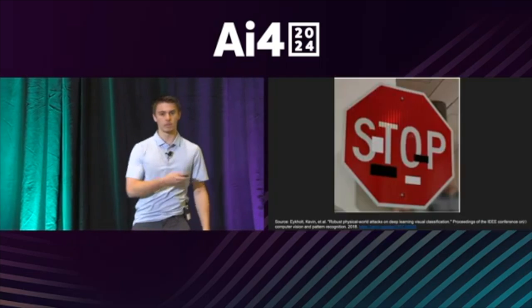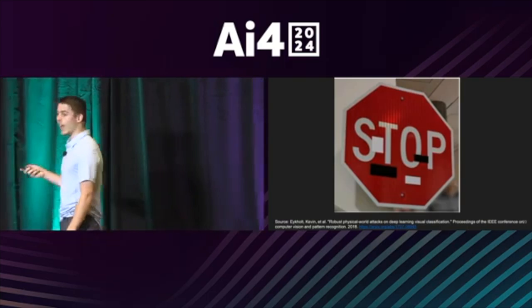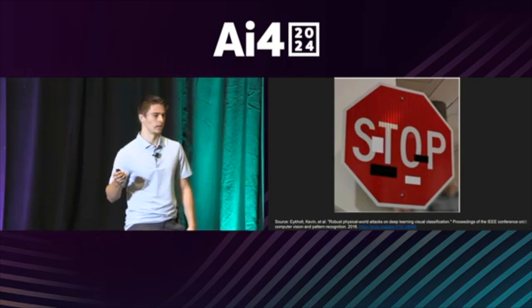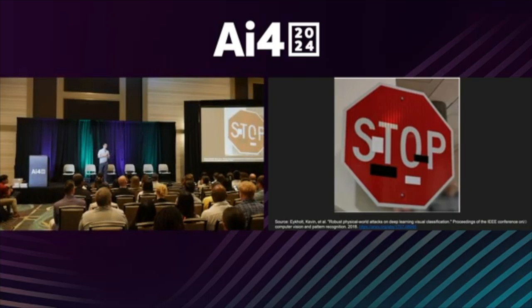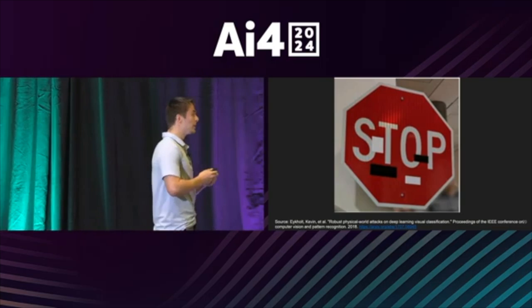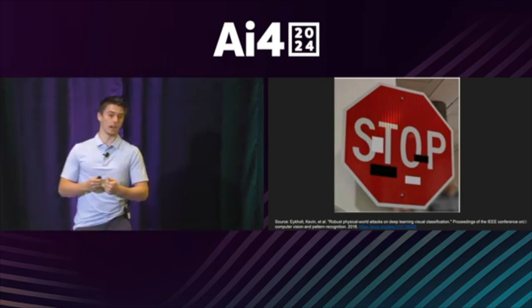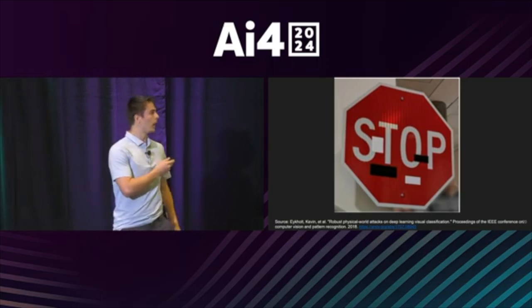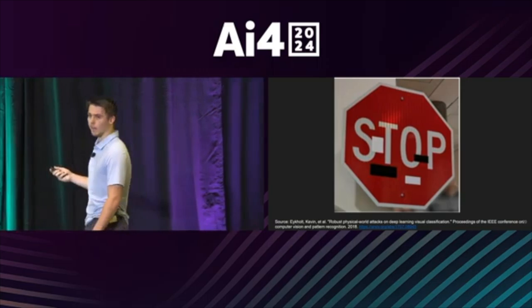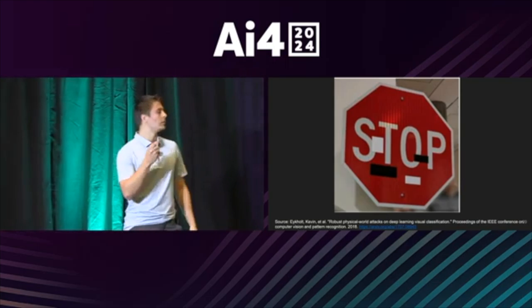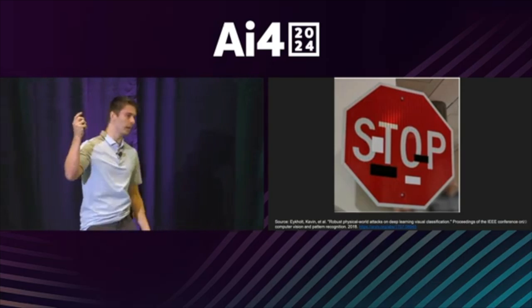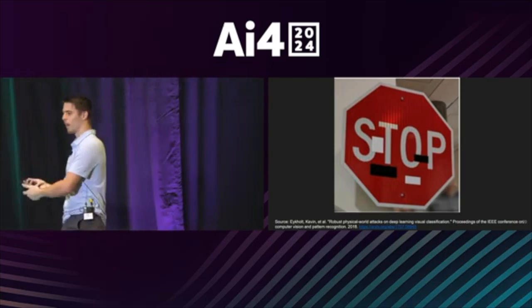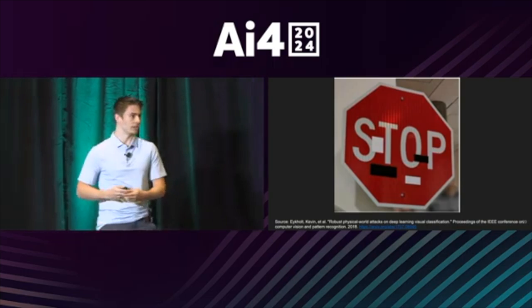You should care about this because that stop sign — the AI thought it was a 45-mile-per-hour sign. Imagine you're pulling up to an intersection, you expect another car to stop, so you accelerate forward — but instead of slowing down, it speeds up. There have been real lives lost due to misclassifications from AI, and these are often mistakes no human would make. There's Tesla's self-driving car thinking the moon was a yellow light, or people putting traffic cones on their cars to confuse Waymo vehicles.